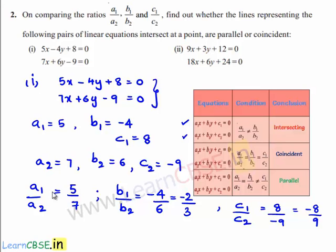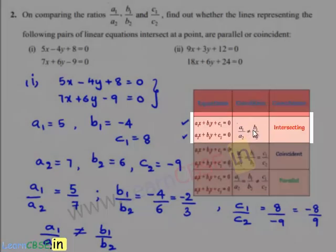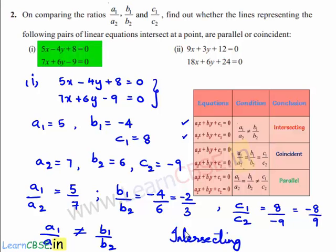None of the values a1 by a2, b1 by b2, and c1 by c2 are equal. So a1 by a2 is not equal to b1 by b2. By using the first condition, if a1 by a2 is not equal to b1 by b2, we conclude that the given set of linear equations are intersecting. That means the lines which represent the given equations are intersecting lines.